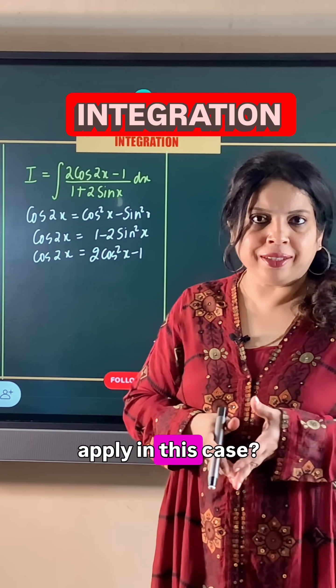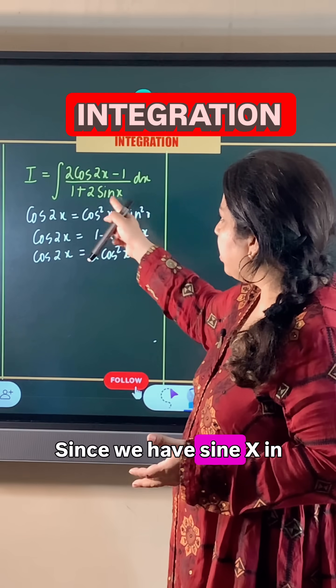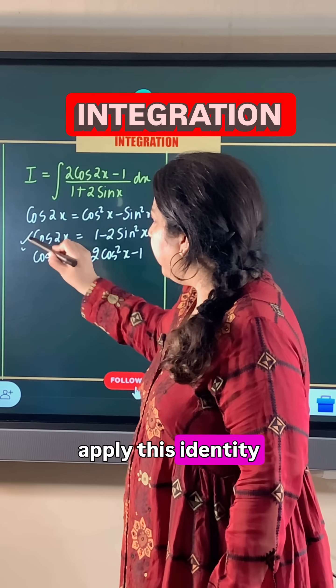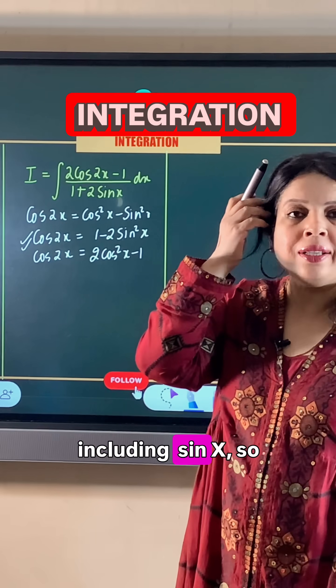Which identity should we apply? Since we have sinx in the denominator, let's apply the identity that includes sinx.